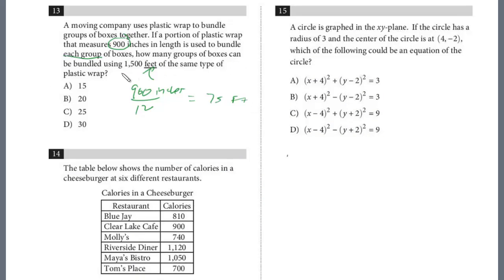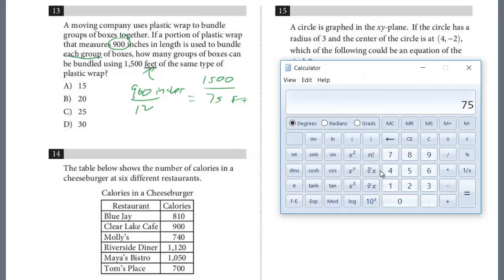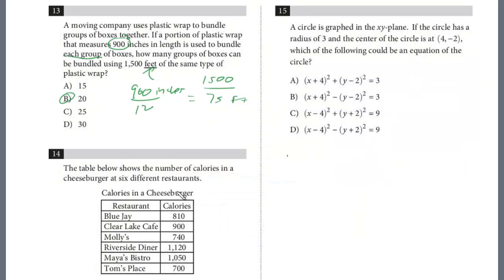How many groups of boxes can be bundled using 1,500? So now we have the same unit. So we just divide 1,500 by 75, and this will yield our answer. So 1,500 divided by 75, and the answer is 20.